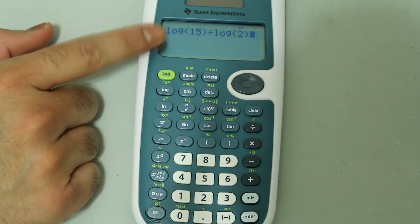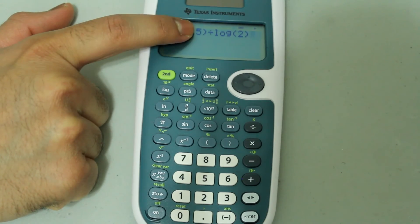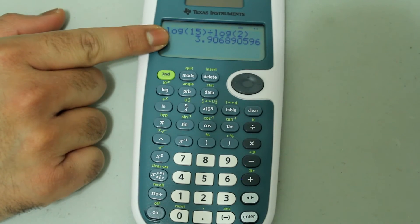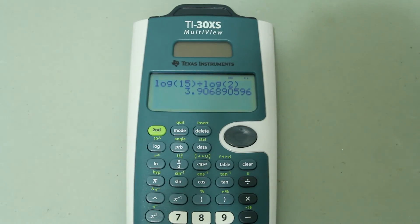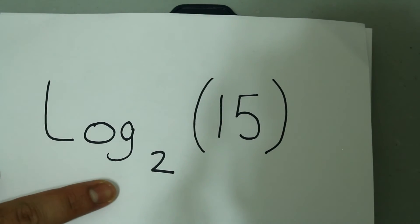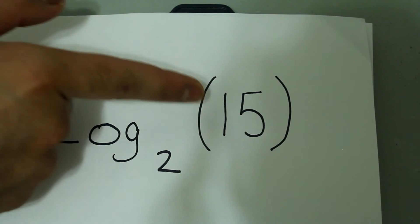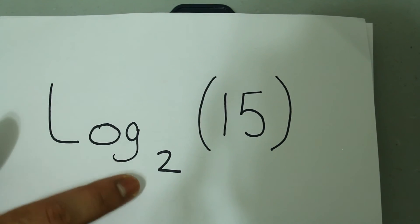So this is log of 15 with a base of 10 divided by log of 2 with a base of 10. And when you press that, the answer comes out, which is the same as log of 15 with a base of 2. So if you want to do log with any base, take the log with the base of 10 of that number, divide that by log with a base of 10 of the base.